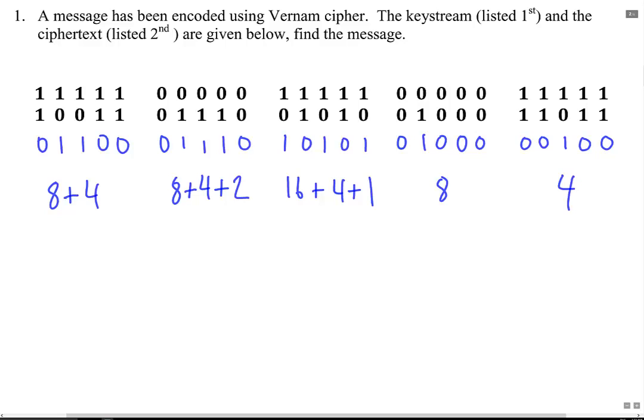So we can add up these numbers. We got 12, and 12 plus 2 is 14. 16 plus 4 plus 1 is 21, and 8 and 4.